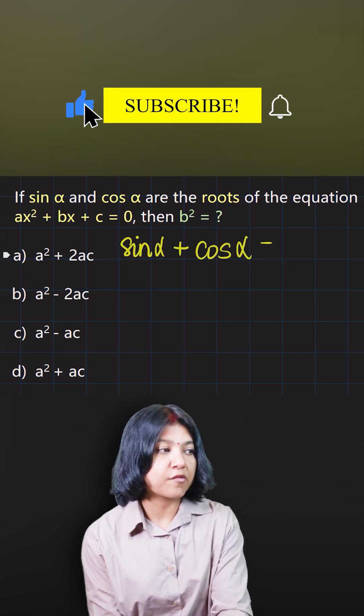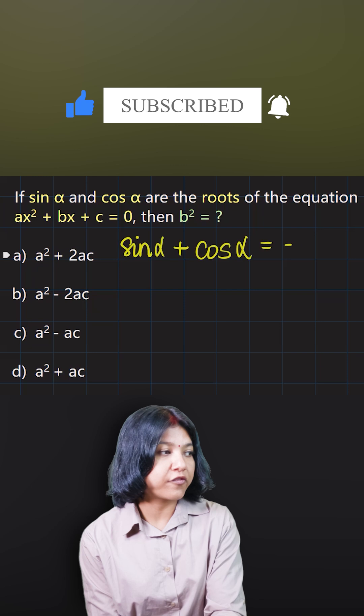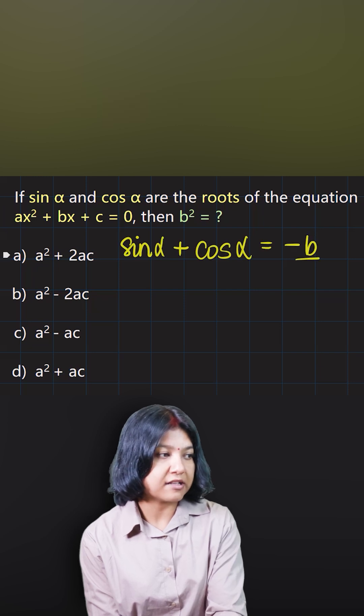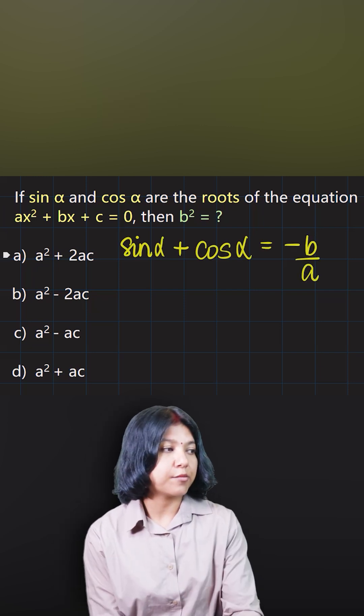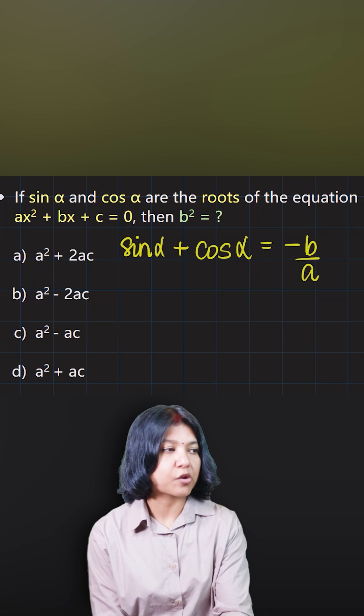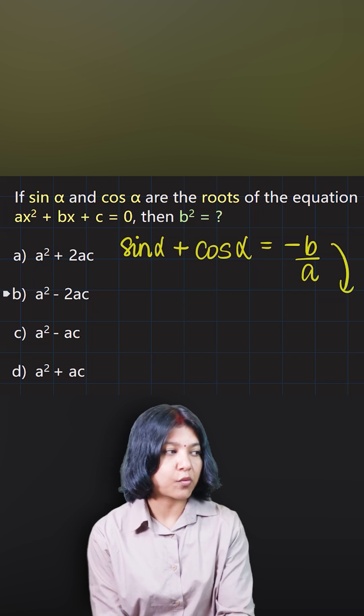The sum of roots is always equal to the negative coefficient of x upon the coefficient of x squared. Now, because they want to find the value of b squared, it's very quick that we can square this equation on both sides.